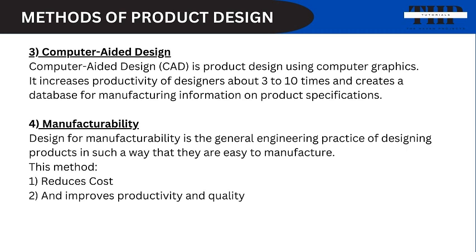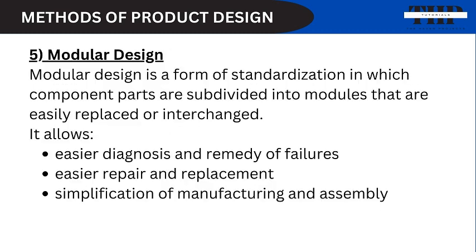Third, Computer Aided Design, or CAD, is a product design using computer graphics. It increases the productivity of designers about 3 to 10 times and creates a database for manufacturing information on product specifications. Fourth, design for manufacturability is a general engineering practice of designing products in such a way that they are easy to manufacture. These methods reduce cost and improve productivity and quality. Fifth, modular design is a form of standardization in which components are subdivided into modules that are easily replaced or interchanged. It allows easier diagnosis and remedy of failures, easier repair and replacement, and simplification of manufacturing and assembly.